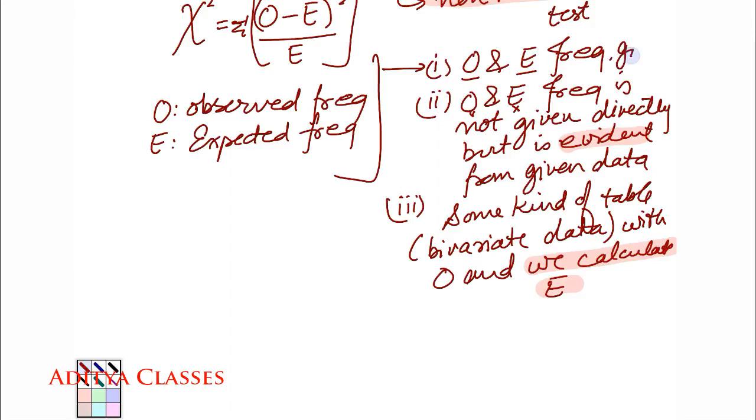Observed and expected are given. So if we differentiate, the case is, in first case observed and expected are given. Second, they are not given but they are evident. In third case observed is given while expected is left to us. We calculate it somehow. We will make use of some formula and do those things when we get there again.